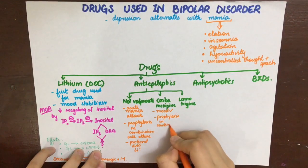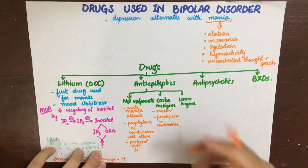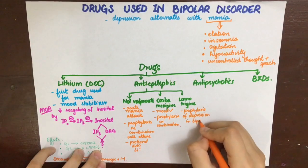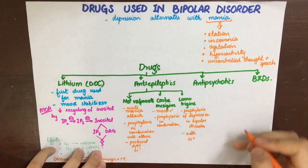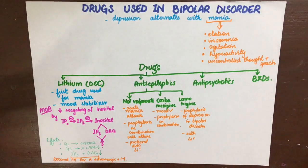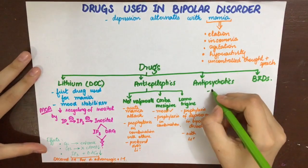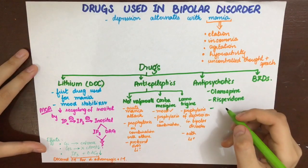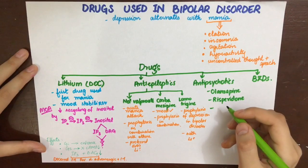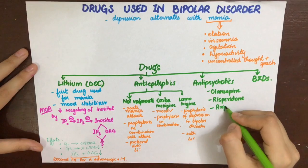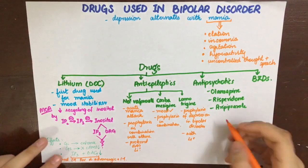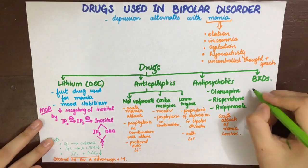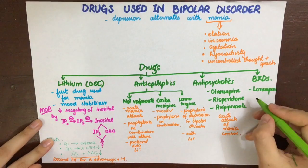Carbamazepine is used as a mood stabilizer and in prophylaxis in combination with sodium valproate or lithium. A special property of lamotrigine is its action on decreasing serotonin reuptake, and thus it is used in prophylaxis of depression in bipolar disorder — unlike all the others — and can be used along with lithium. Antipsychotics can also be used in the manic phase of bipolar disorder; they include olanzapine, risperidone, and aripiprazole. These block dopamine receptors and, as they work on positive symptoms in schizophrenia, they will also block the hyperstimulation and excitation in the manic phase, controlling an acute attack of mania.